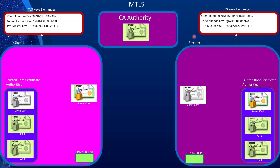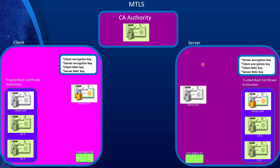The client verifies that the certificate is still valid, checks the issuer's domain name to ensure it comes from a valid CA, and uses the issuer's public key to ensure the digital signature is valid and has not been tampered with. Then the client sends its own certificate to the server, and the server goes through the same validation process. This mutual verification is what makes it mTLS.